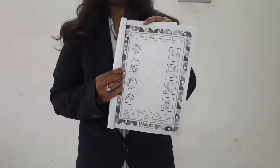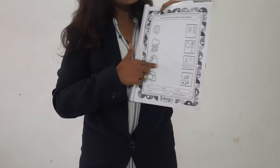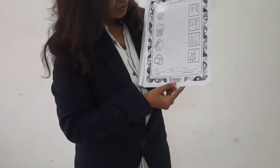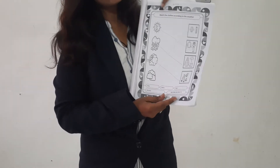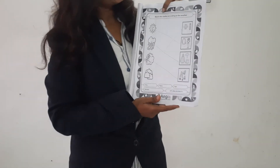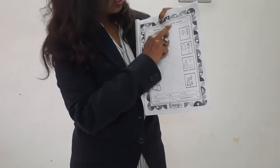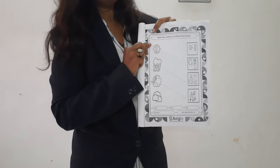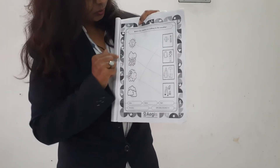Now kids, what is this? This is a worksheet — Worksheet number 10. You all have this worksheet, right? What you have to do is: match the clothes according to the weather. According to the weather, you have to match the clothes.